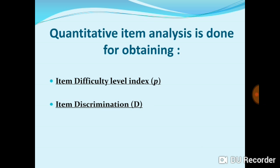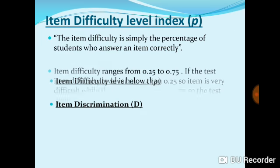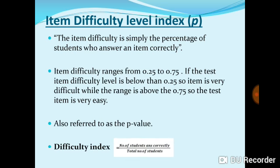Item difficulty level is simply the percentage of students who answer correctly in the exam, or who know the correct answer to the test item. Item difficulty ranges from 0.25 to 0.75. If the difficulty level is below 0.25, the item is very difficult and we cannot include it in the test. If the range is above 0.75, the test item is too easy and every student can attempt it, so we also cannot include it in our test.